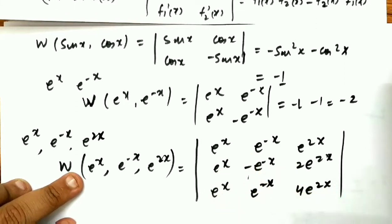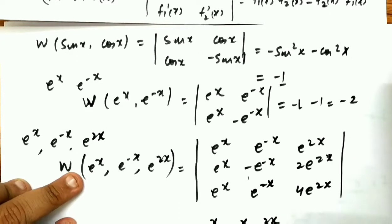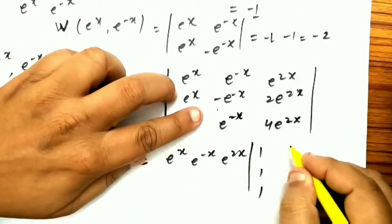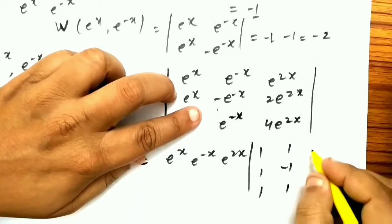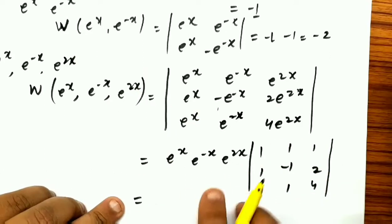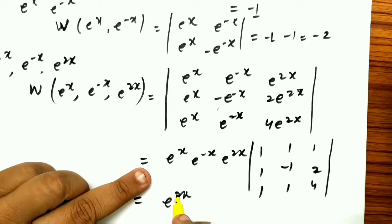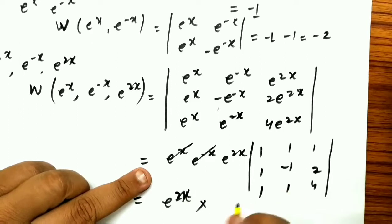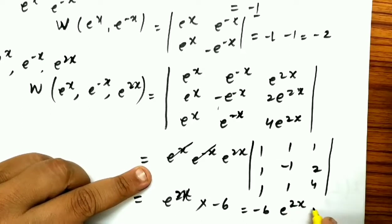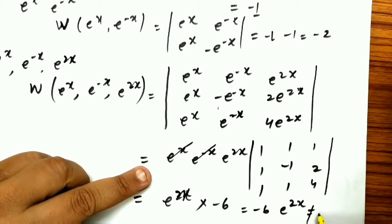We use determinant properties: factor out e^x, e^(−x), and e^(2x) from the respective columns. Their product e^(2x) comes out. Inside, the remaining 3×3 determinant has rows [1, 1, 1], [1, −1, 2], [1, 1, 4]. Solving this inner determinant gives −6. Therefore the Wronskian equals −6e^(2x), which is non-zero since the exponential function is never zero.